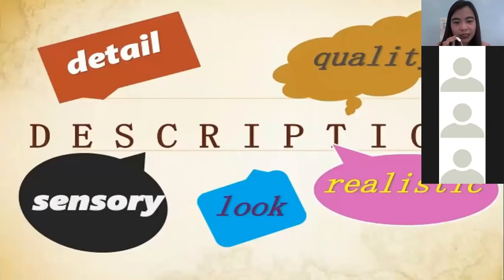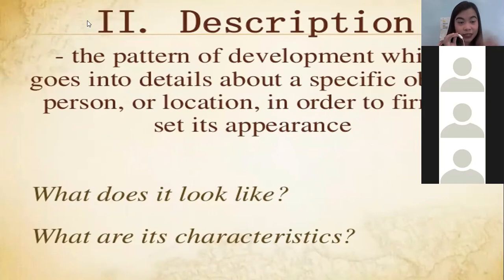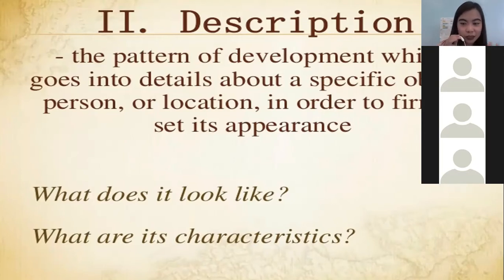Next, the third pattern is Description. It is the pattern of development which goes into details about a specific object, person, or location in order to firmly set its appearance. By the word itself — description — you are describing a specific object, person, or location according to their appearance. The difference between definition and description: in definition, you give the meaning of an idea or thing; in description, you describe it. It answers the questions: 'What does it look like?' and 'What are its characteristics?'